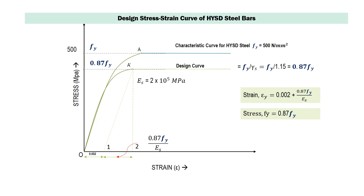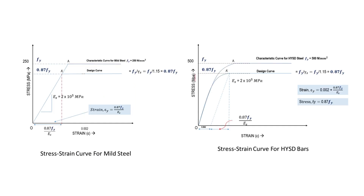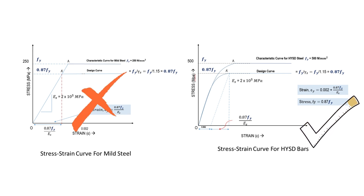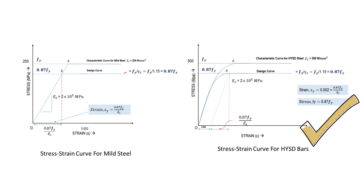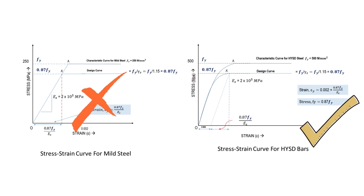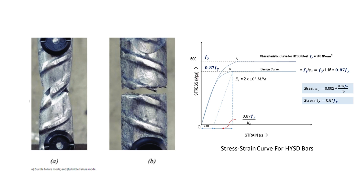One important point: the strain value derived for HYSD bars — 0.002 + 0.87 FY / ES — is used for all grades of steel, not just HYSD. The Indian Standard Code specifies this uniform criterion so that steel yields at the ultimate limit of strain. The advantage of steel yielding at ultimate strain is that failure of the reinforcement bars will be ductile in nature. Ductile failure warns us about impending collapse, allowing time to take necessary precautions — showing a sign of failure before complete collapse of the structure.